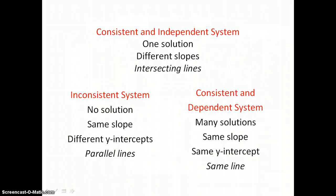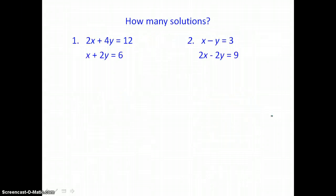Not all systems intersect. When they do, we consider it a consistent and independent system. Intersecting lines have different slopes, and this system gives us one solution. We also have inconsistent systems with no solution, because the lines are parallel — parallel lines have the same slope and different y-intercepts. A consistent and dependent system has many solutions, because we end up with the same line. Sometimes that's all we want to know — how many solutions the system has.